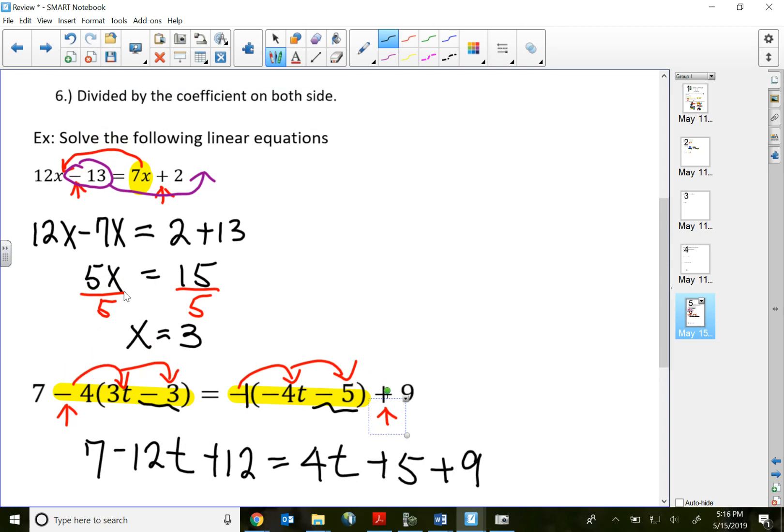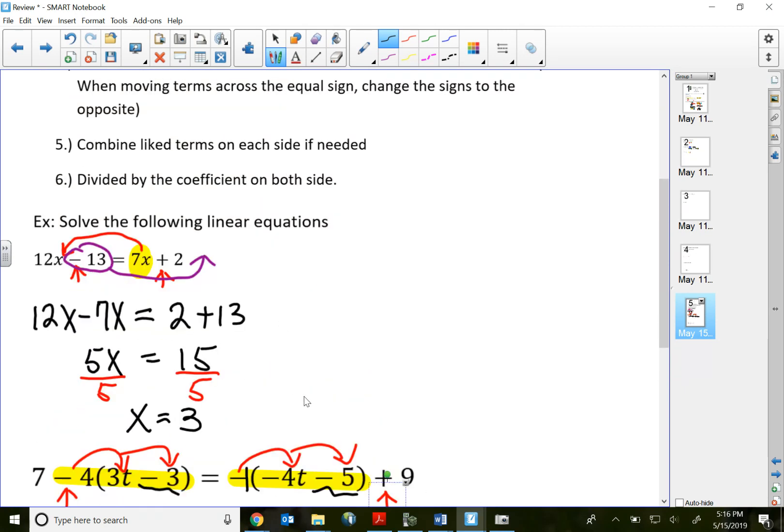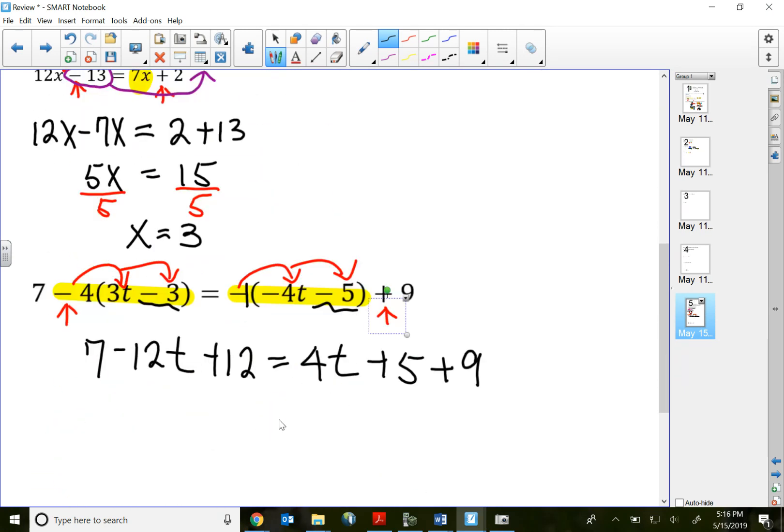Let's do step number 3: combine like terms on each side. So on the left side of the equal sign, negative 12t has no like term to combine, so still negative 12t.